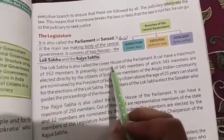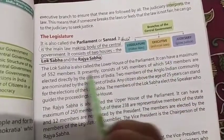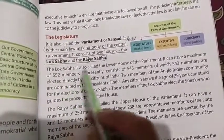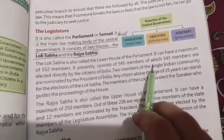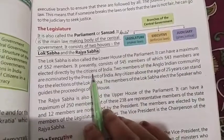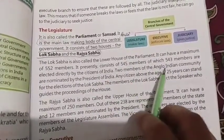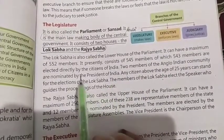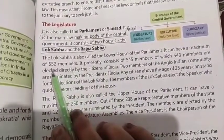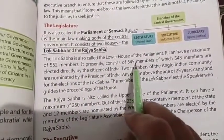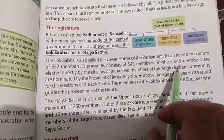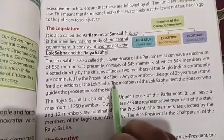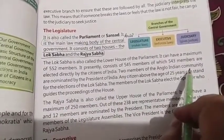Lok Sabha is called the lower house of the Parliament. It can have a maximum of 552 members. Presently, it consists of 545 members, of which 543 members are elected directly by the citizens of India, and two members of the Anglo-Indian community are nominated by the President of India.